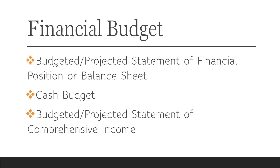For the financial budget, it is composed of the following financial statements: the budgeted or projected statement of financial position, also called the pro forma statement of financial position or balance sheet; the cash budget, also called the projected or pro forma statement of cash flows; and the budgeted or projected statement of comprehensive income.